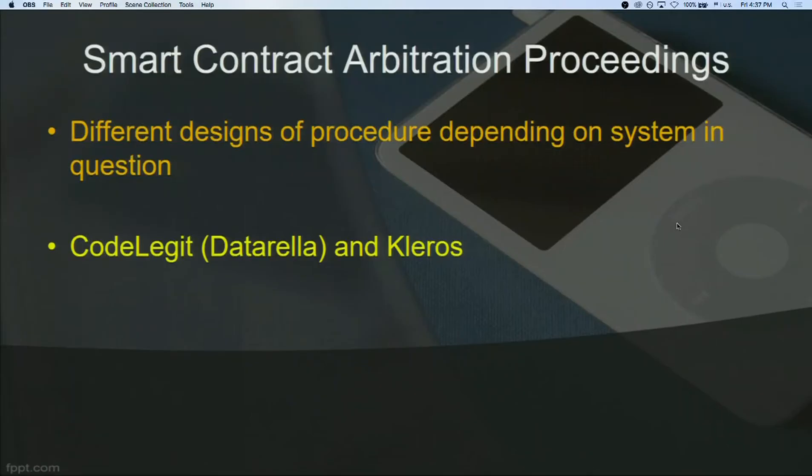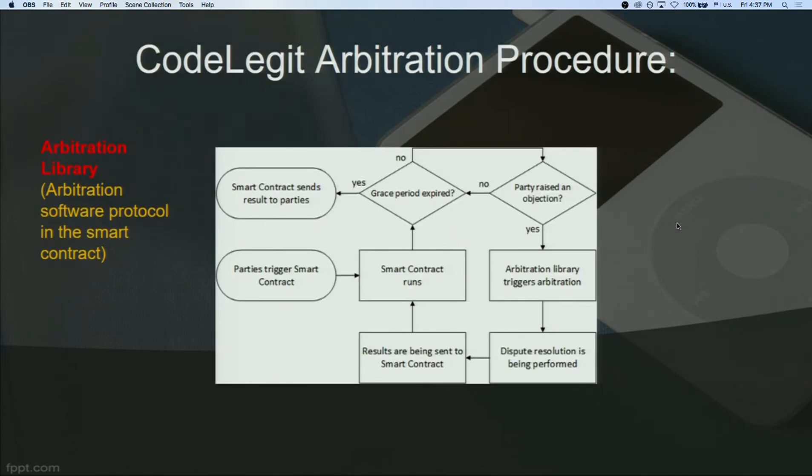In arbitration, parties are allowed to choose whichever procedural rules they want to apply. So far there's no specific procedure for smart contract arbitration — we have different designs. One I'll focus on is CodeLegit by Datarela, which was the first mock arbitration based on smart contracts. There's also a system called Kleros. I'll explain my analysis of CodeLegit and the extent to which its procedure is recognized by law.